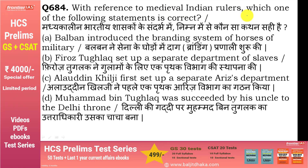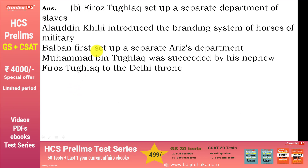With reference to medieval Indian rulers, which statement is correct? Option B — Firoz Tughlaq set up a separate department of slaves. Balban ने branding system of horses introduce किया था, Alauddin Khilji ने नहीं. Alauddin Khilji ने separate Arz department set up किया था, Balban ने नहीं. Muhammad bin Tughlaq का successor उसका चाचा नहीं, बल्कि nephew बना था — Firoz Shah Tughlaq; Firoz Shah Tughlaq का uncle था Muhammad bin Tughlaq.